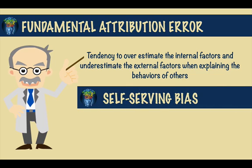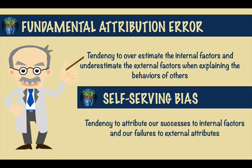We also like to have good thoughts and feelings about ourselves, and we have a self-serving bias. This means that we tend to equate our success to internal factors and our failures to external attributes. So for example, if you obtain a good grade on an assignment, you are likely to attribute this to your own intelligence and good preparation. But if you obtain a bad grade, you would likely place the blame on external factors, such as your teacher's poor ability in explaining the assignment.